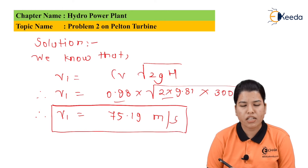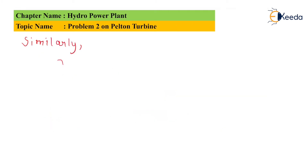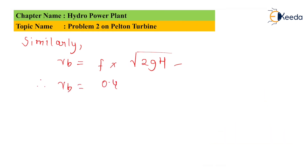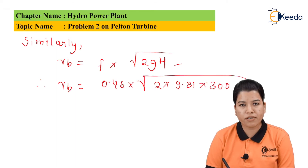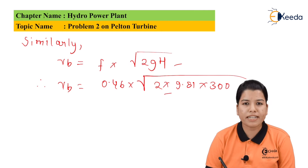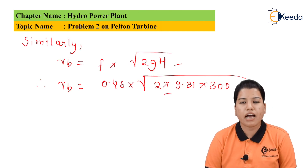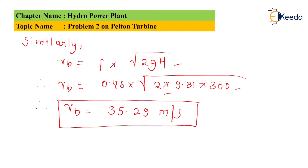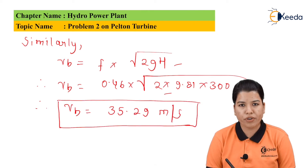Similarly, let us find the value of Vb. The formula for Vb can be written as Vb is equal to F multiplied by the square root of 2gH. Substituting the values, Vb is equal to 0.46 multiplied by the square root of 2 multiplied by 9.81 multiplied by 300. After solving, we get Vb equal to 35.29 meter per second.